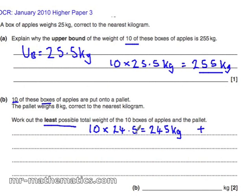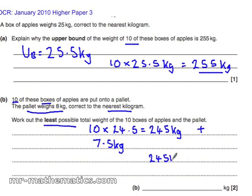Now we add the lowest possible weight of a pallet, to the nearest kilogram, which would make it 7.5 kilograms. So the least possible weight of all 10 boxes and the pallet is 245 kilograms plus 7.5 kilograms, which comes out as 252.5 kilograms.